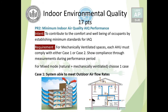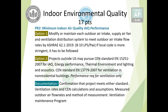For mechanically ventilated spaces, each air handling unit (AHU) must comply with either Case 1 or Case 2, with compliance shown by measurements taken during the performance period. Case 1 is that the system is able to meet outdoor airflow rates required by the standard. For Option 1, the system must comply with ASHRAE 62.1 — the American Society of Heating, Refrigeration, and Air Conditioning Engineers standard — which requires 8 to 10 liters per second per person. If the local code is more stringent, it must be followed.